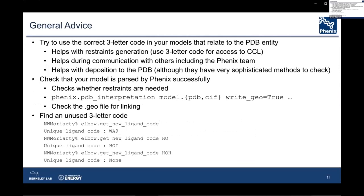Some general advice: when generating restraints in Phoenix, try to use the correct three-letter code for the entity. This helps with restraints generation, helps others understand what your model contains, and may help with deposition. The PDB has very sophisticated code to ensure there is no duplication. If you get a model file, check that it is parsing correctly — the command phoenix.pdb_interpretation is the geometry engine for all Phoenix refinement programs, so you can check your model quickly without using experimental data.